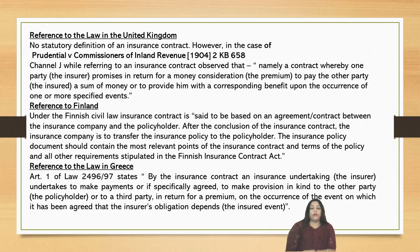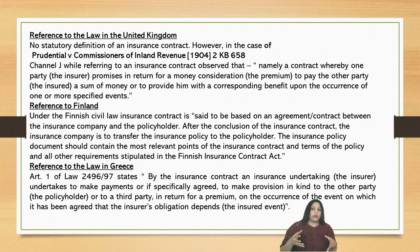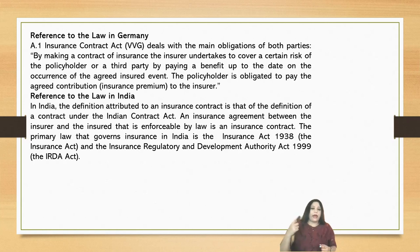Reference to the law in Greece: Article 1 of Law 2496/1997 states that by the insurance contract, there is an undertaking by the insurer to make payments — or if specifically agreed, to make provision in kind — to the policyholder or to a third party, in return for a premium, on the occurrence of the event on which the insurance obligation depends — that is, the insured event. So there is an insurer, an insured, and an event that is covered, for which a premium is paid, and the insurer's obligation is triggered on the happening of that event.